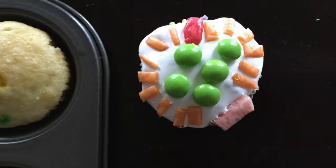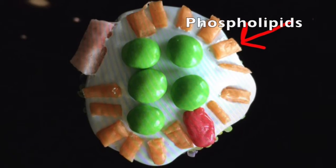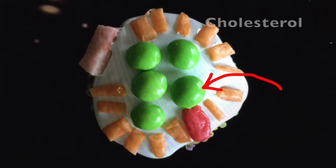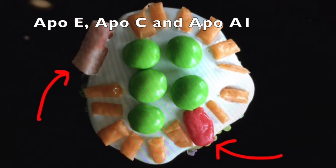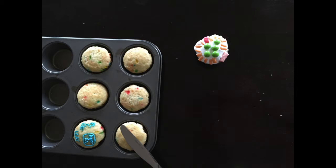After the nascent HDL is produced, lipidation occurs in the phospholipids, our orange starbursts, cholesterol, our green skittles, ApoE and ApoC are placed on our apolipoprotein ApoA1.